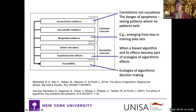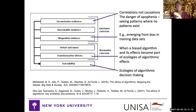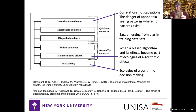There are epistemic concerns regarding algorithmic bias as well as normative concerns. There's inconclusive evidence — often correlations rather than causations — and a real danger of apophenia, where we see patterns where there are none. The evidence is inscrutable: a decision is announced — 'you are at risk' — and you cannot scrutinize or appeal it. There's misguided evidence from biased data training sets, unfair outcomes, transformative effects when biased algorithms become part of ecologies of algorithmic effects, and traceability issues as one algorithm morphs into an ecology of others.